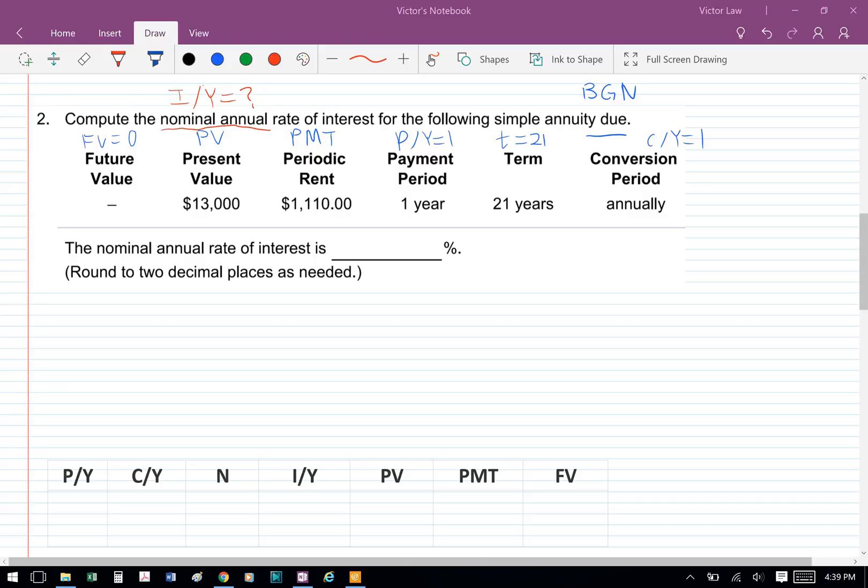And then where future value equals to zero, present value equals to $13,000, payments is $1,110, P over Y is 1 because payment period equals to 1 year, and then term is 21 years, so T equals to 21, conversion period is annually, so C over Y equals to 1.